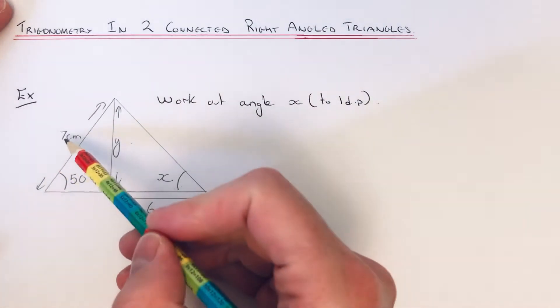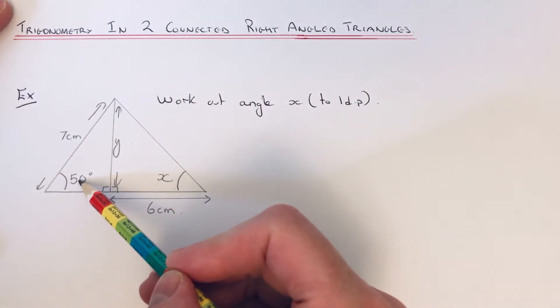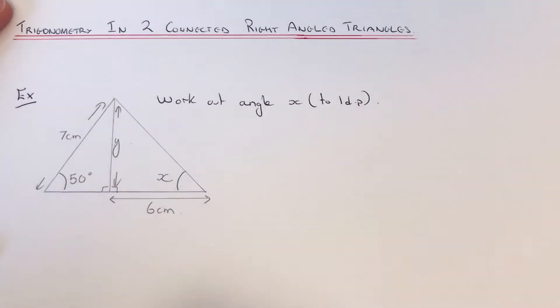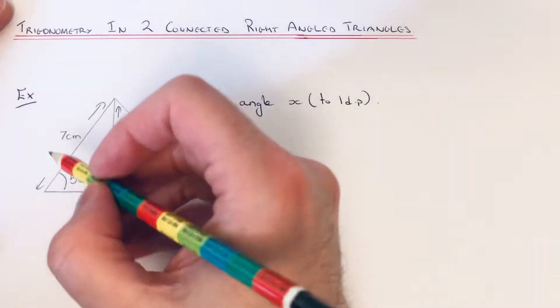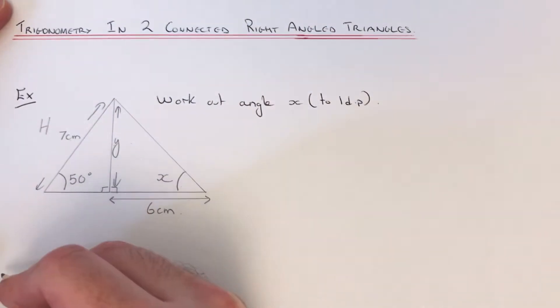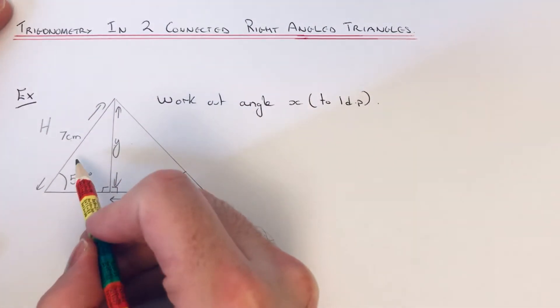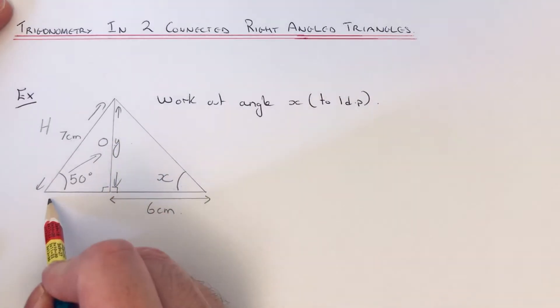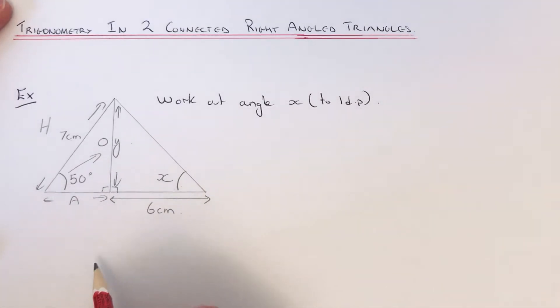Since we've got a side and an angle and we need another side, that means we need to use trigonometry. Our longest side of this right angle triangle is the hypotenuse, the side which is opposite the angle is O, and the third side here is the adjacent side.